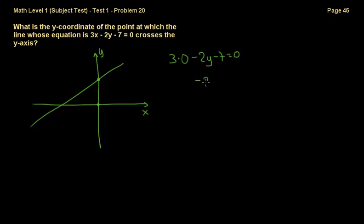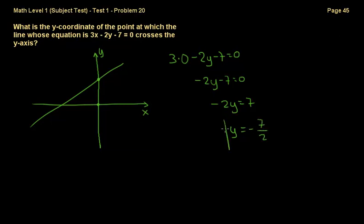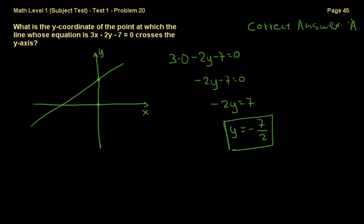Substituting x equals 0: 3 times 0 minus 2y minus 7 equals 0, which gives us minus 2y minus 7 equals 0, so minus 2y equals 7, and y equals negative 7/2. That is the correct answer, so the correct answer is A.